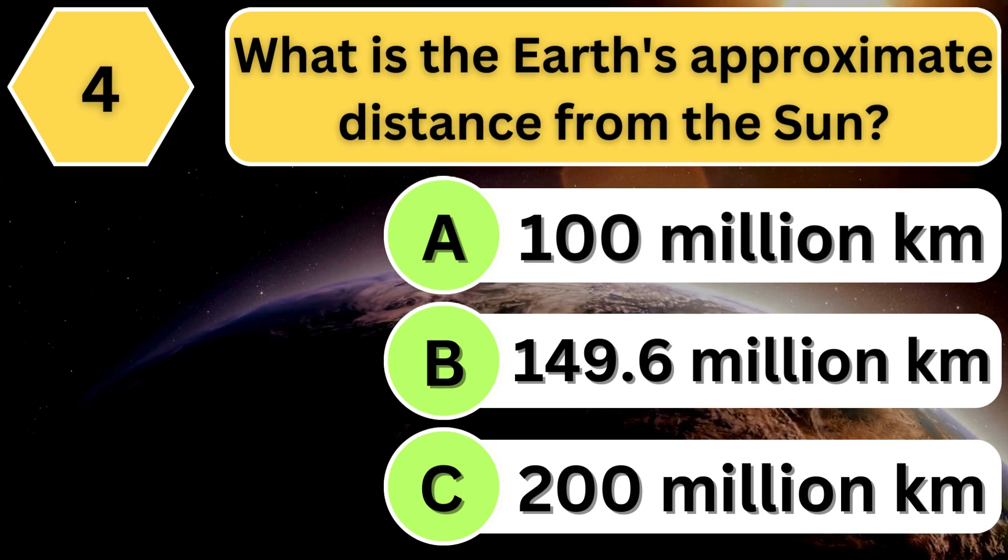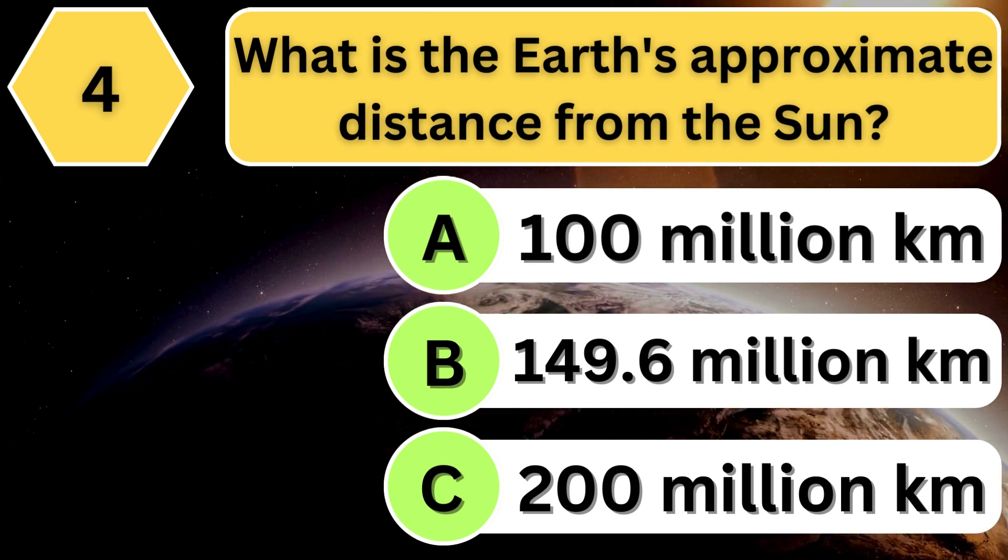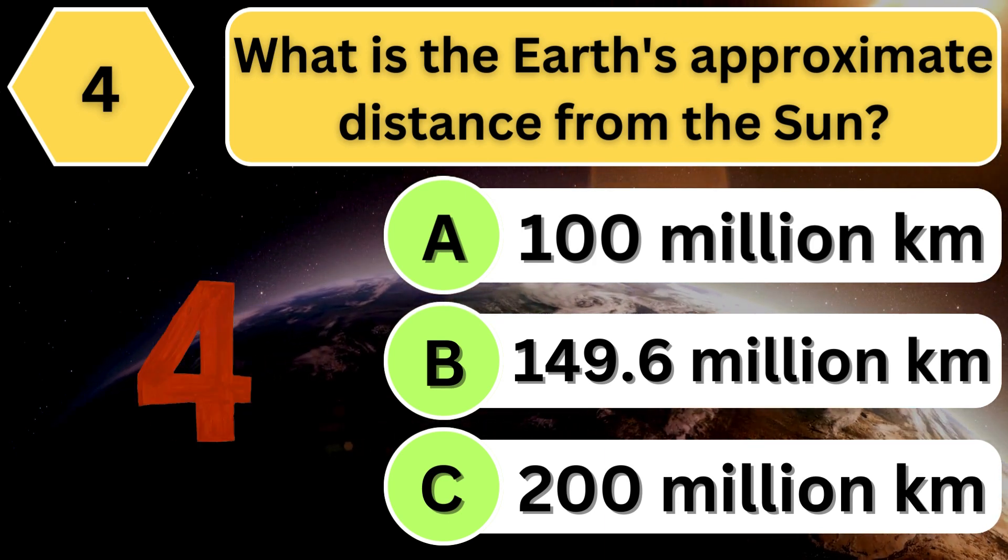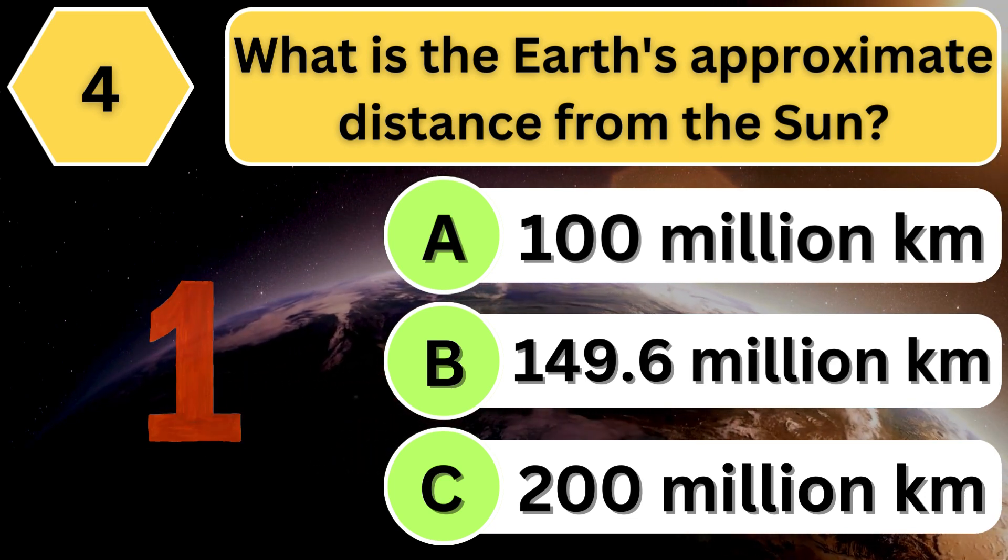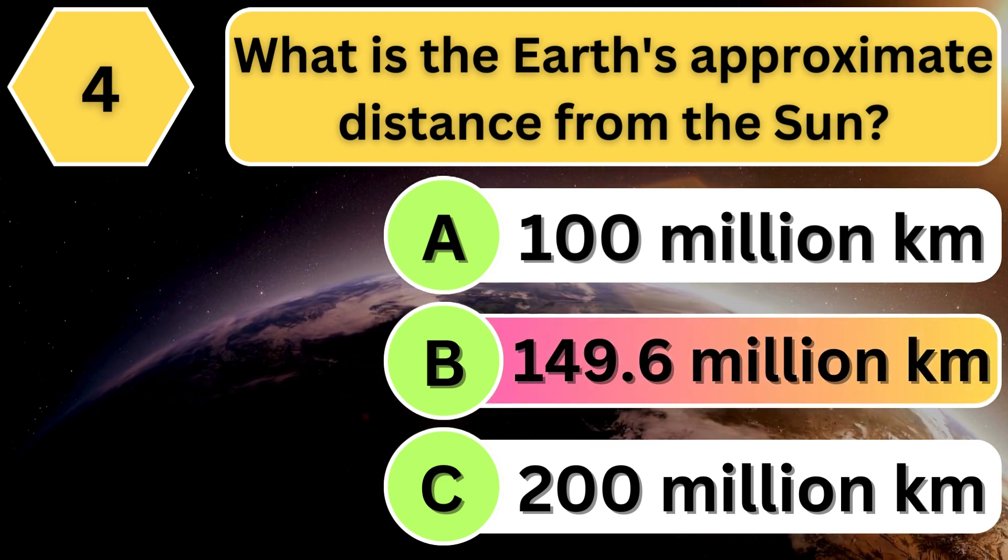What is the Earth's approximate distance from the Sun? The answer is B.